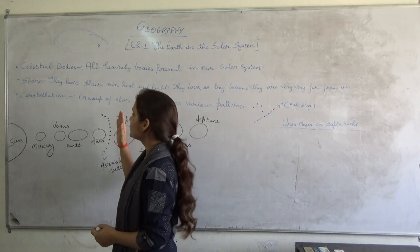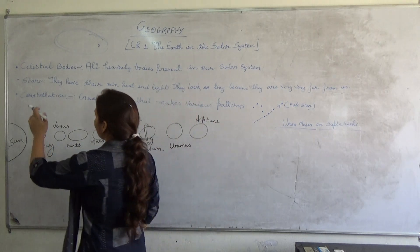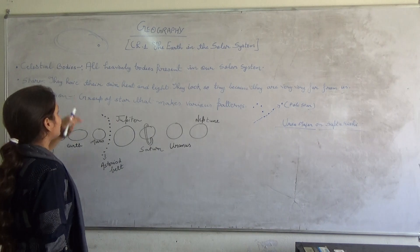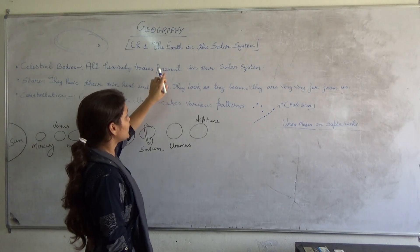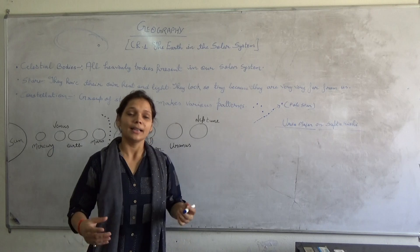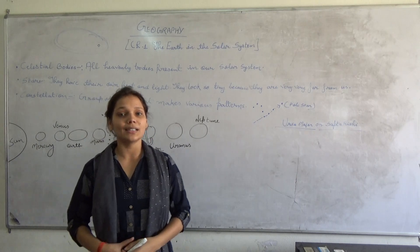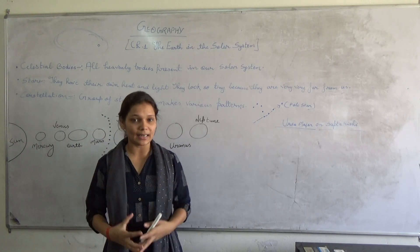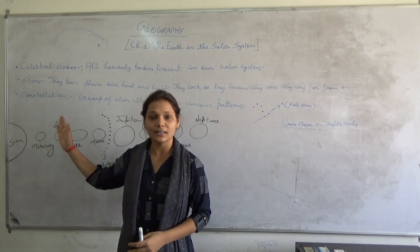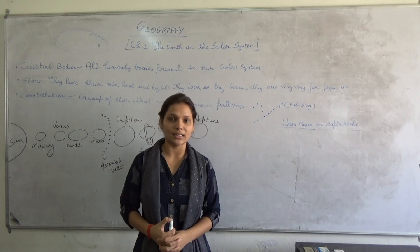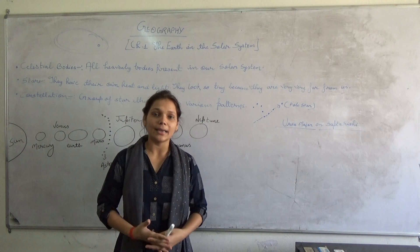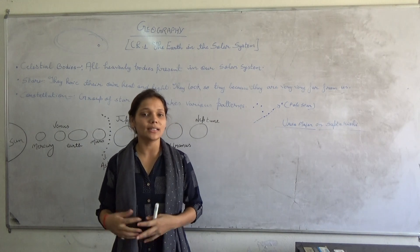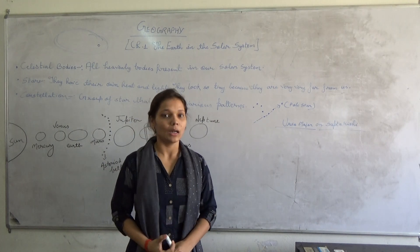Before coming to solar system, let us know what is celestial bodies. All the heavenly objects present in our solar system are called as celestial bodies. Some celestial bodies have their own heat and light, for example stars. Some do not have their own heat and light, for example planets. Planets all depend on sun for their heat and light.